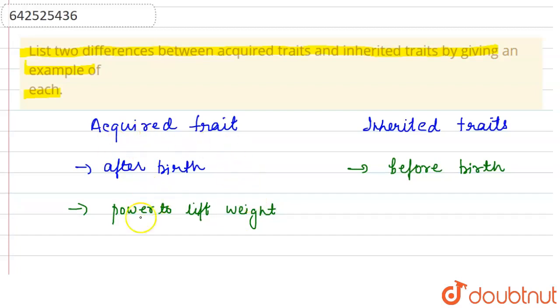That is why this is the acquired trait and the property of acquired trait is that it cannot be passed on from one generation to another. Whereas inherited trait, that means the gene was present before the birth.